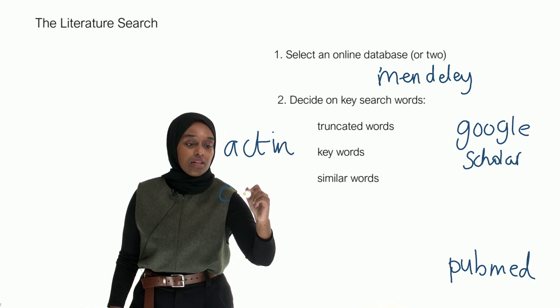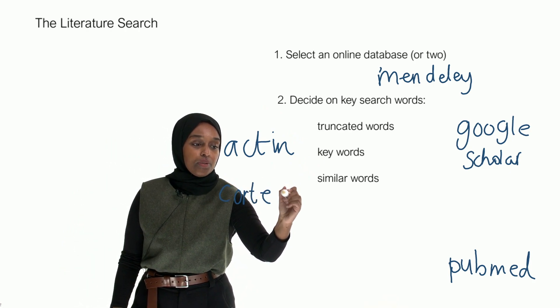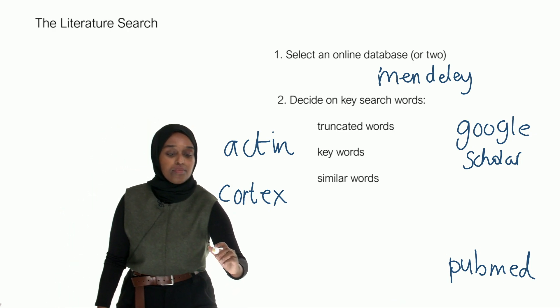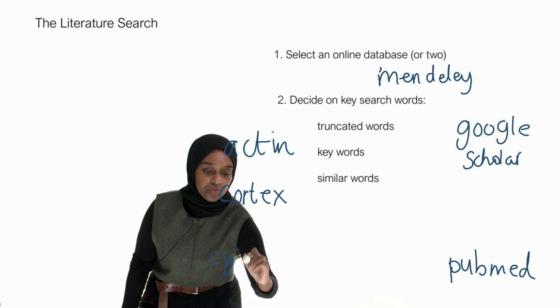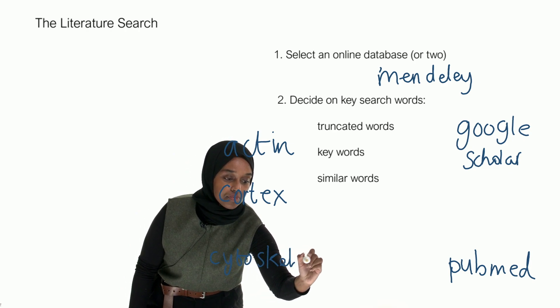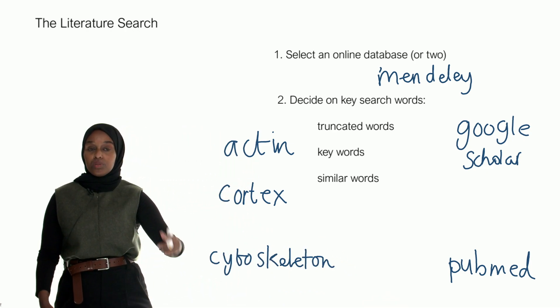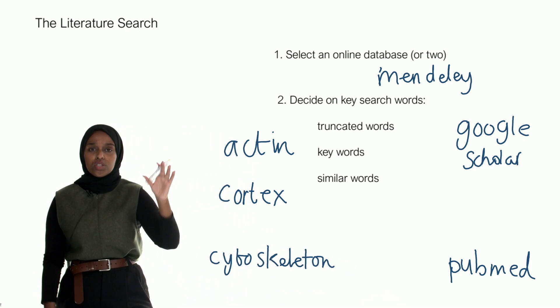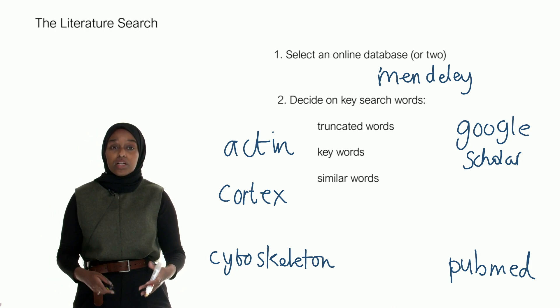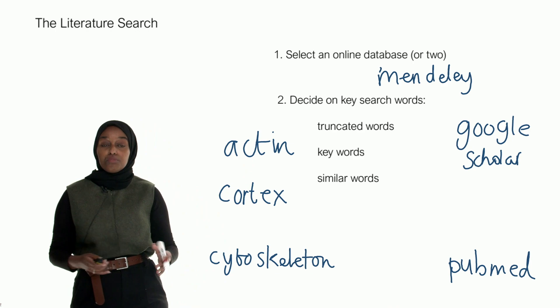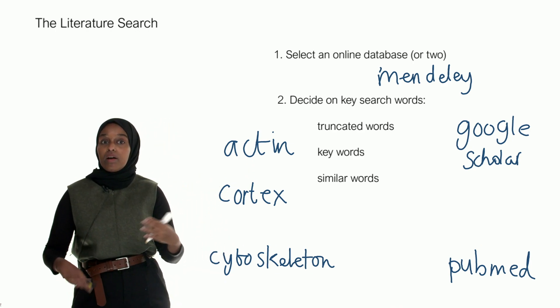And then I'd probably say the next big keyword would be cortex, because I'm looking at the actin cortex. And then maybe my third big word would be the cytoskeleton. And then on top of those words, I'll look at the different proteins that I was looking at.